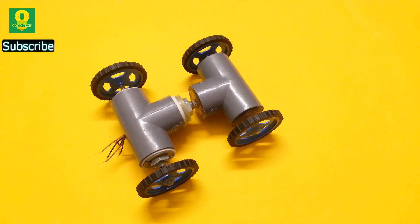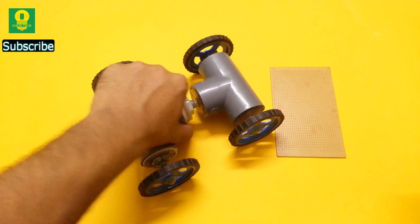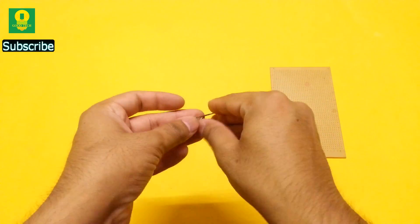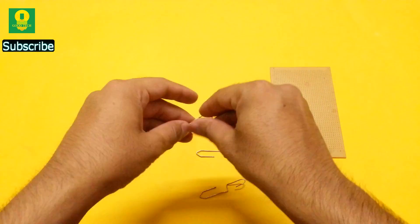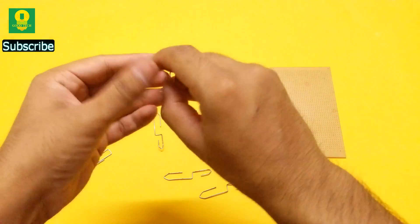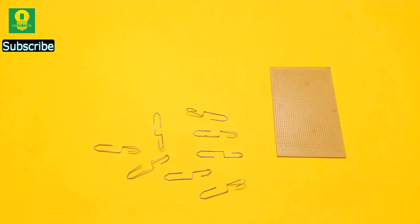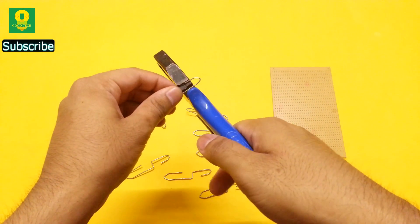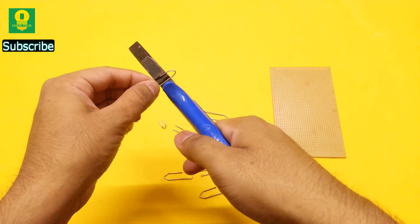It is now time to make a remote control for the car. Take a general purpose PCB board and few office clips. Unfold the clips and using pliers, cut the smaller part to get 8 similar pieces.